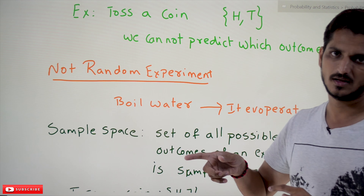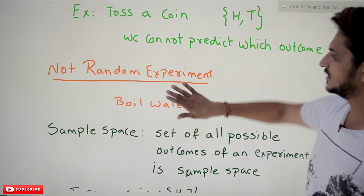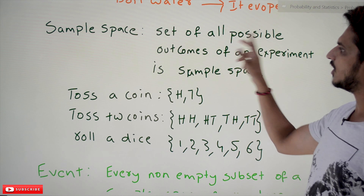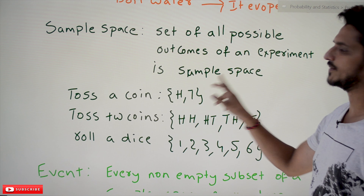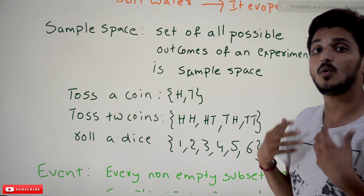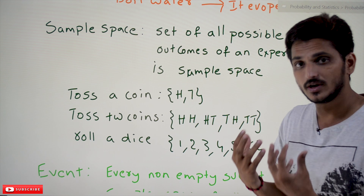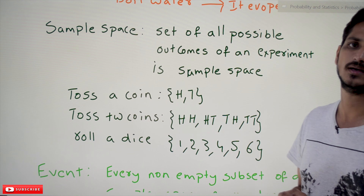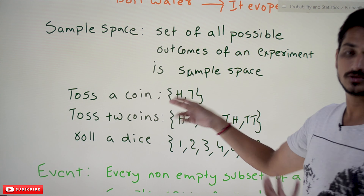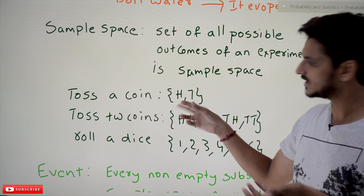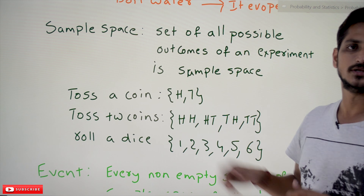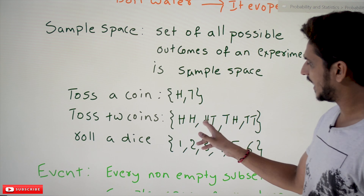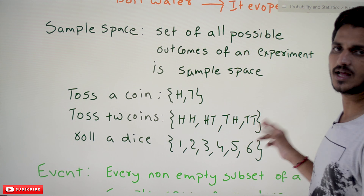Now coming to sample space. The set of all possible outcomes of an experiment is called sample space. Whatever all the possible outcomes you are going to get in a random experiment, we call it as sample space. Example: toss a coin — the possible outcomes are head, tail. Toss two coins — the possible outcomes are head-head, head-tail, tail-head, tail-tail.